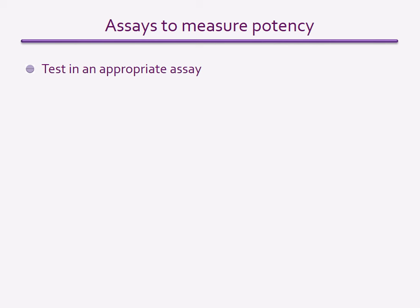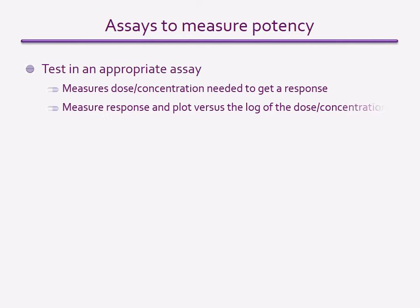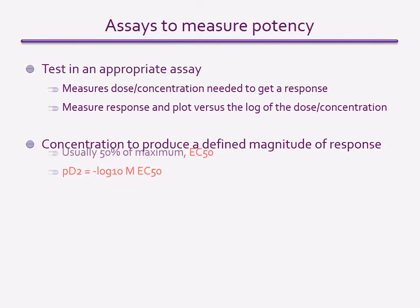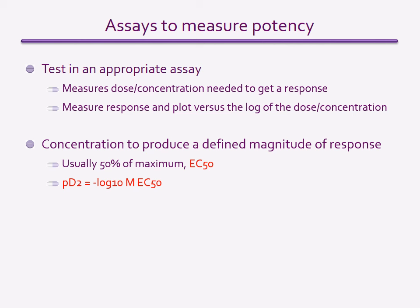Once a compound has been identified as active in a binding assay, its biological activity can then be assessed using a bioassay. These assays measure the potency and efficacy of compounds. Responses to the compound over a range of applied concentrations are measured, then plotted as a function of the log of the dose (if in vivo) or concentration (if in vitro) — known as a log dose or log concentration response curve. The concentration required to produce 50% of the maximum response is known as the EC50. To indicate the potency of a compound, the PD2 is often calculated, which is equal to the negative log to the base 10 of the EC50 in units of molar concentration.